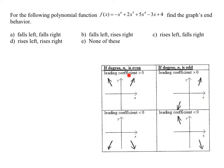If the leading coefficient is positive, they both point up. If the leading coefficient is negative, they both point down. If the degree is odd, they point in opposite directions. If the leading coefficient is positive, it looks like this, and if the leading coefficient is negative, it goes like this.